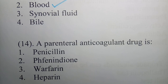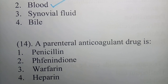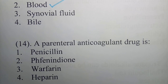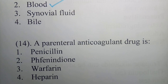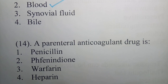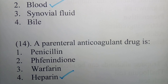Question 14: A parenteral anticoagulant drug is - options are penicillin, phenindione, warfarin, heparin. The correct answer is option 4 - heparin. Heparin is the parenteral anticoagulant drug.